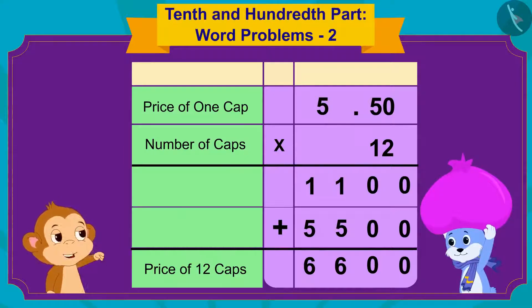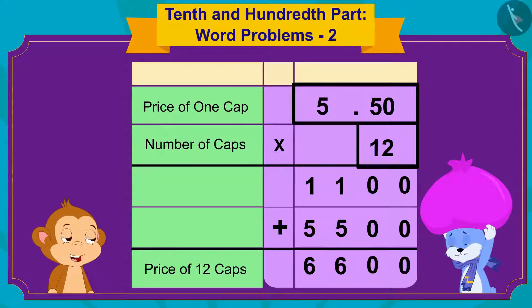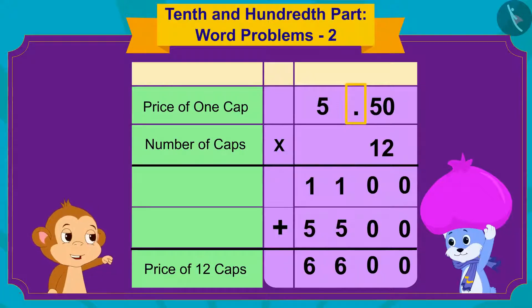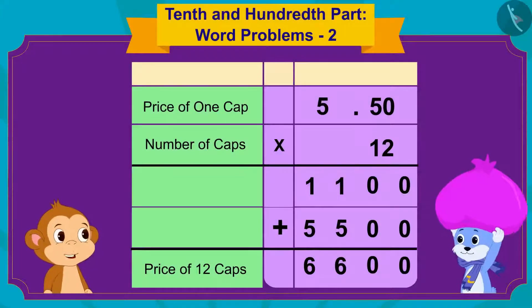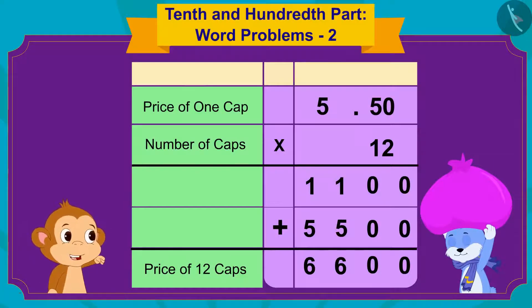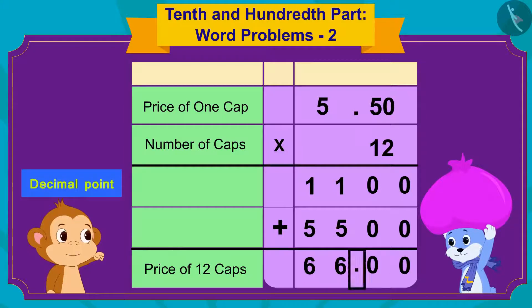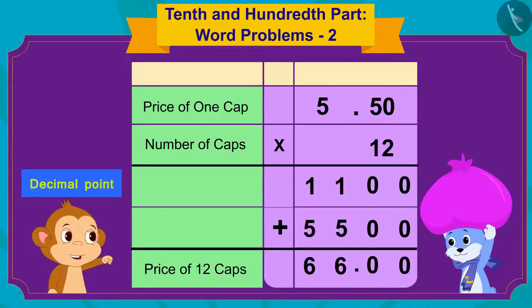No, Bunny. Now we have to see how many digits are there after the decimal point in the numbers being multiplied. How many digits are there after the decimal point in 5 rupees and 50 paise? Babban asked Bunny. 2 digits, Bunny quickly replied. Absolutely right! So we will write the decimal point in the answer in such a way that there are only two digits after the decimal point.